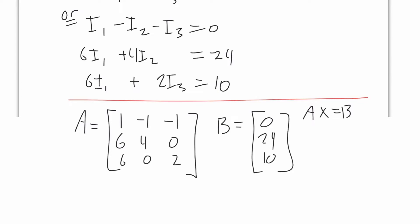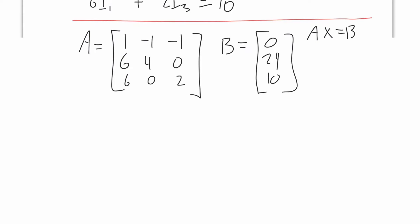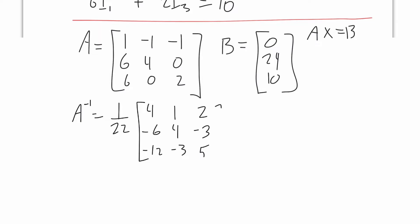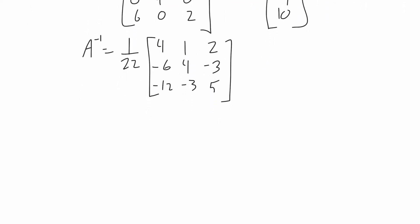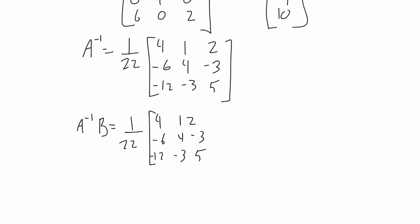To solve, we need A inverse. For a 3x3 matrix this is tricky, so we can use an online calculator. The result is (1/22) times [4, 1, 2; -6, 4, -3; -12, -3, 5]. We compute A inverse times B: multiply this matrix by [0, 24, 10], leaving the 1/22 factor in front.